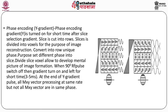The slice selection gradient is on at the time of sending the RF pulse, slightly before its application, so we can select the slice. The next step is to cut the slices into rows, done by the phase encoding gradient. This gradient is turned on for a shorter period of time after the slice selection gradient is on. The phase encoding gradient cuts the slices into rows by applying the gradient perpendicular to the z-axis. This 90-degree RF pulse is then switched on, the gradient turns on for a very short period of time.